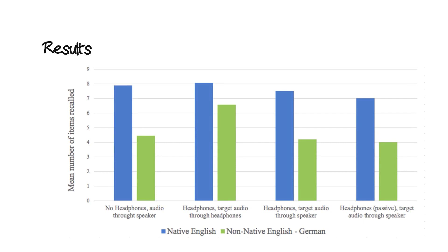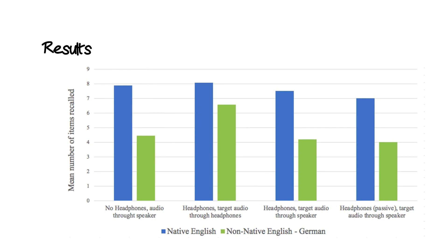The results revealed that the effect of noise on recall performance was more severe for non-native English speakers than native speakers. In fact, native English speakers were able to recall approximately 80% more words correctly in the presence of in-cabin aircraft noise than non-native speakers. The use of noise cancelling headphones improved recognition by 50% for non-native English speakers.